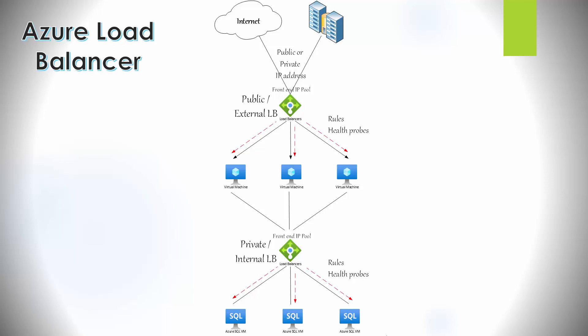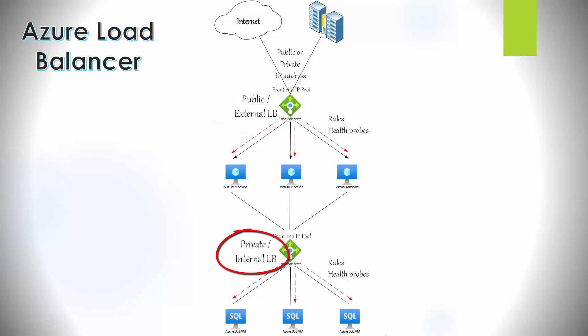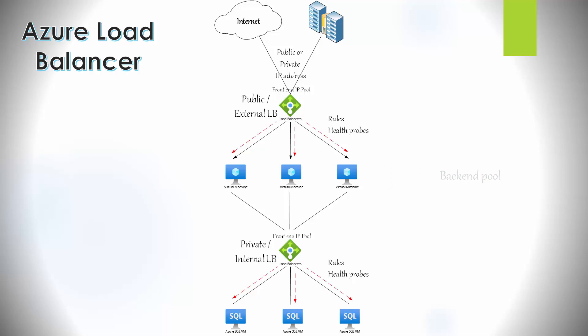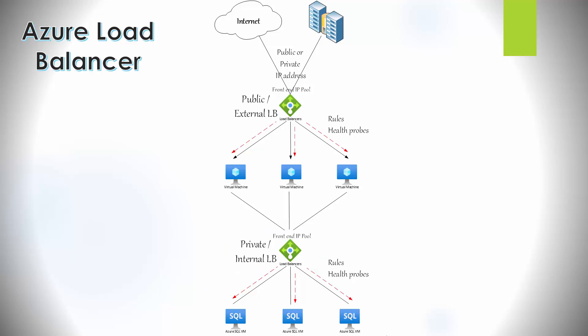The Azure load balancer operates at Layer 4 of the OSI model, supporting TCP and UDP traffic. There are two subtypes: the public or external load balancer and the internal or private load balancer. The public load balancer is tied to a public-facing IP address for requests coming from the internet, mapping those requests from the front-end IP to the private IP addresses of the back-end pool — which can be virtual machines or application instances. The internal or private load balancer is used to load balance traffic from internal Azure resources to other Azure resources inside the virtual network, and can also be accessed from an on-premise network in a hybrid deployment.